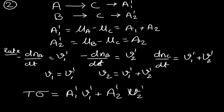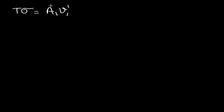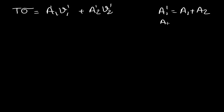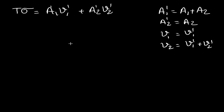We now substitute the relationships: A1' = A1 + A2, A2' = A2, μ1 = μ1', and μ2 = μ1' + μ2' (so μ2' = μ2 − μ1' = μ2 − μ1). Substituting into the entropy production expression for Case 2: tσ = (A1 + A2)·μ1' + A2·(μ2 − μ1).